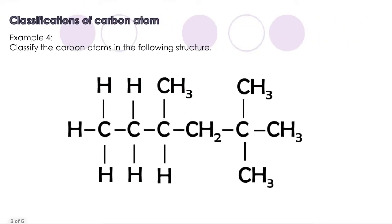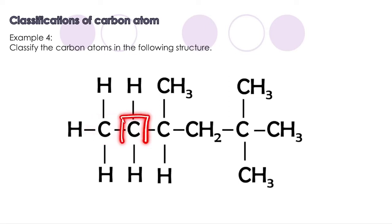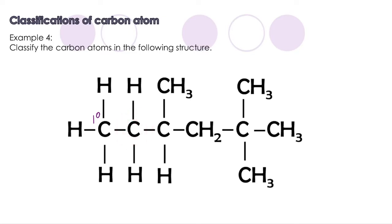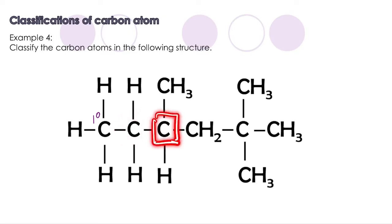Let's take a look at Example 4. We are asked to classify the carbon atoms in the following structure. This carbon is attached to only one carbon, so it is a primary carbon. The next carbon beside it is attached to two carbons, so that carbon is a secondary carbon.